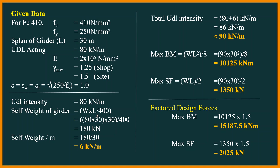The self-weight is calculated using the formula: W×L / 400, where W is the total load acting over the entire span. So: 80 × 30 × 30 / 400 = 180 kN. Self-weight per meter run = 180 / 30 = 6 kN/m. The factor 400 applies when the girder carries UDL only; it reduces to 300 when the girder is subjected to both point load and UDL. So the total intensity of UDL is now 86 kN/m.